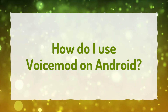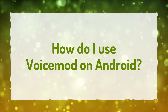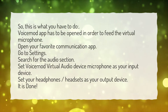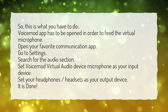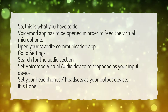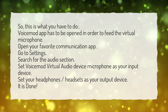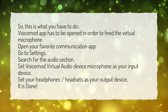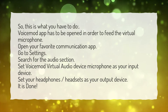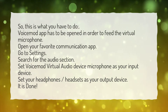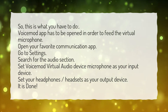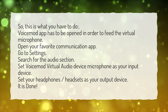How do I use VoiceMod on Android? This is what you have to do. VoiceMod app has to be opened in order to feed the virtual microphone. Open your favorite communication app. Go to Settings. Search for the audio section. Set VoiceMod virtual audio device microphone as your input device. Set your headphones or headsets as your output device. It is done.